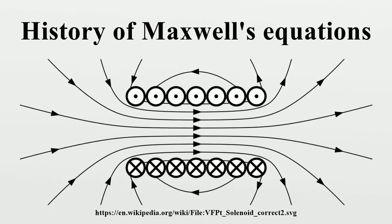Maxwell's original equations are based on the idea that light travels through a sea of molecular vortices known as the luminiferous ether, and that the speed of light has to be measured relative to the reference frame of this ether. Measurements designed to measure the speed of the earth through the ether conflicted with this notion, though.